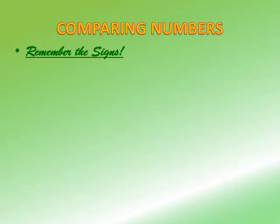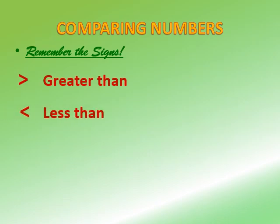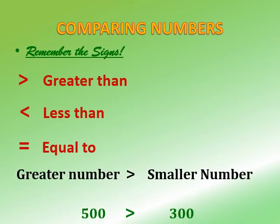Moving ahead to comparing numbers. It's very important that you remember the signs. This is the sign for greater than, this is for less than, and this is for equal to. You need to understand that the sign is used such that the mouth is always open towards the greater number — you can remember it as a crocodile's mouth, which always opens towards the bigger number.